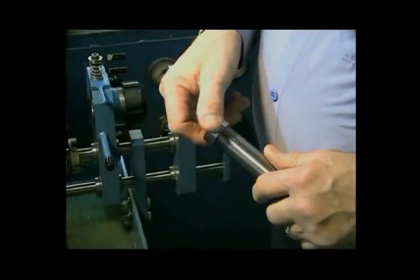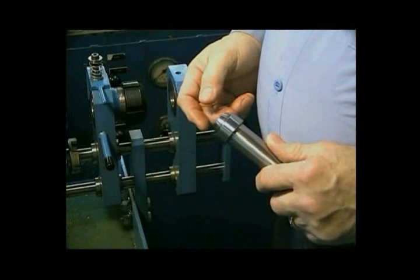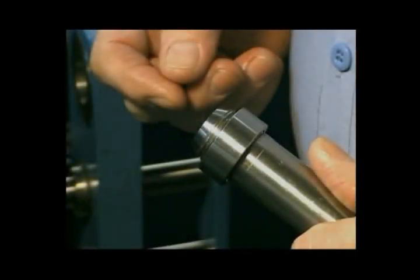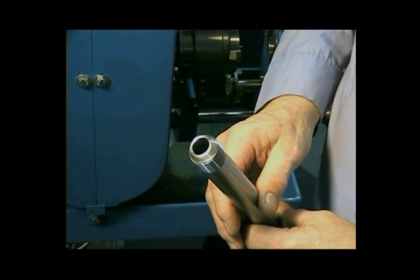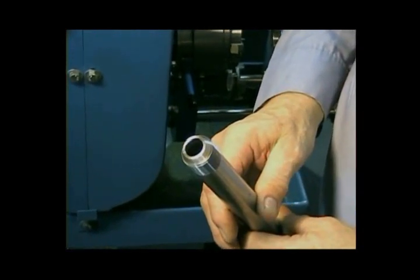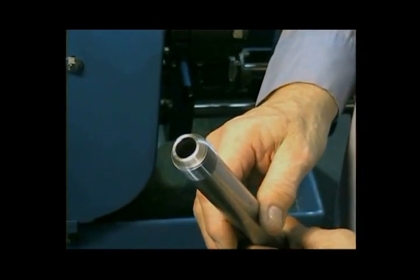Screw a collar onto the tubing to check for proper thread length and depth. Again, there should be one and a half threads showing above the collar, and the collar should screw on easily. If these parameters are not met, adjust the machine and thread a new piece of tubing. Never re-thread tubing. As you can see, this piece of tubing is properly threaded. The machine is now ready to produce one-inch coned and threaded tubing.